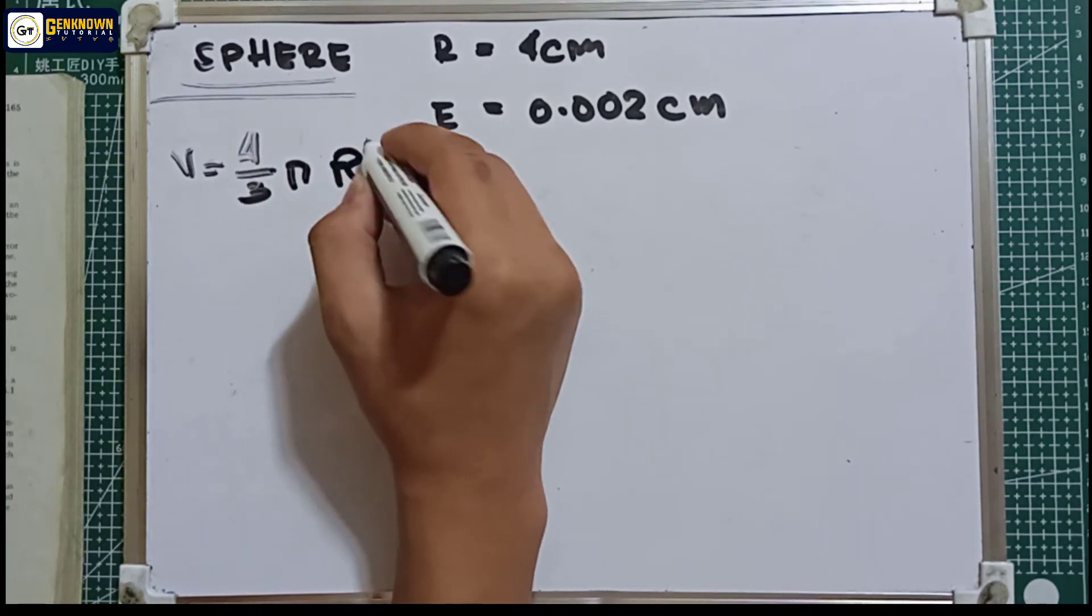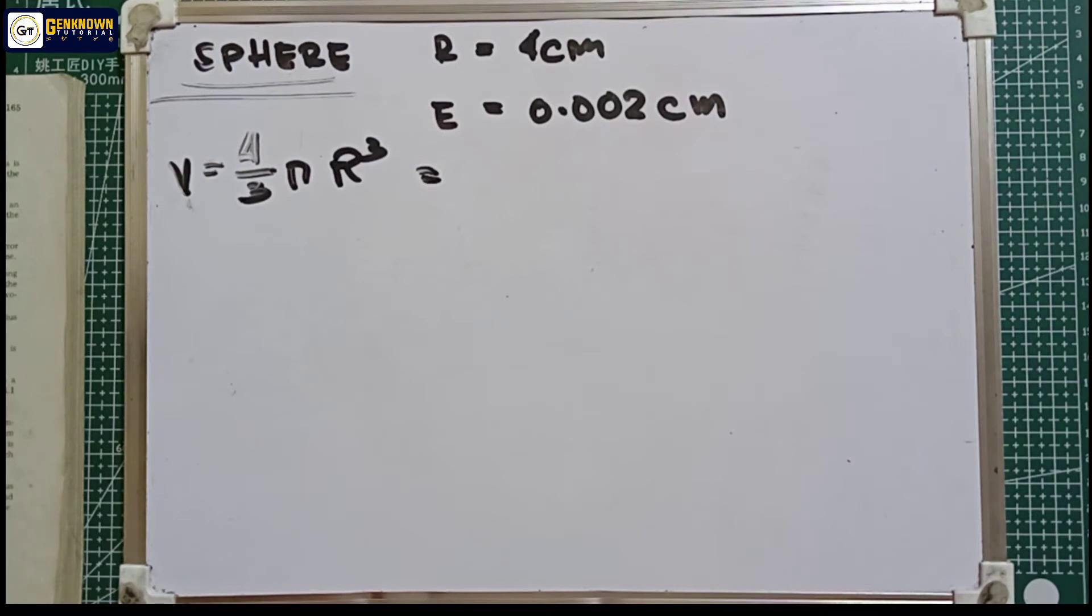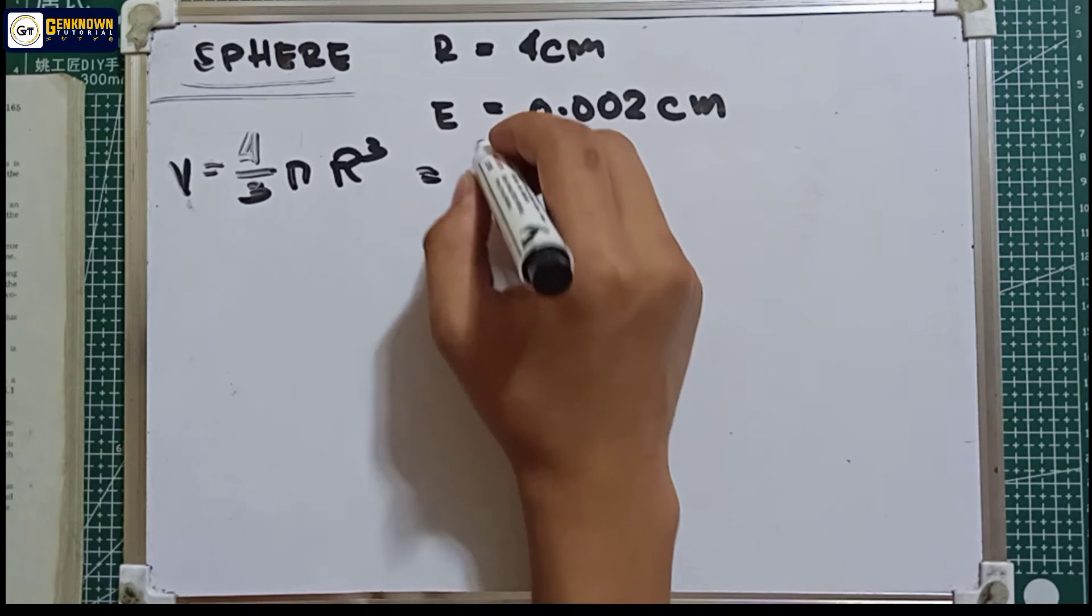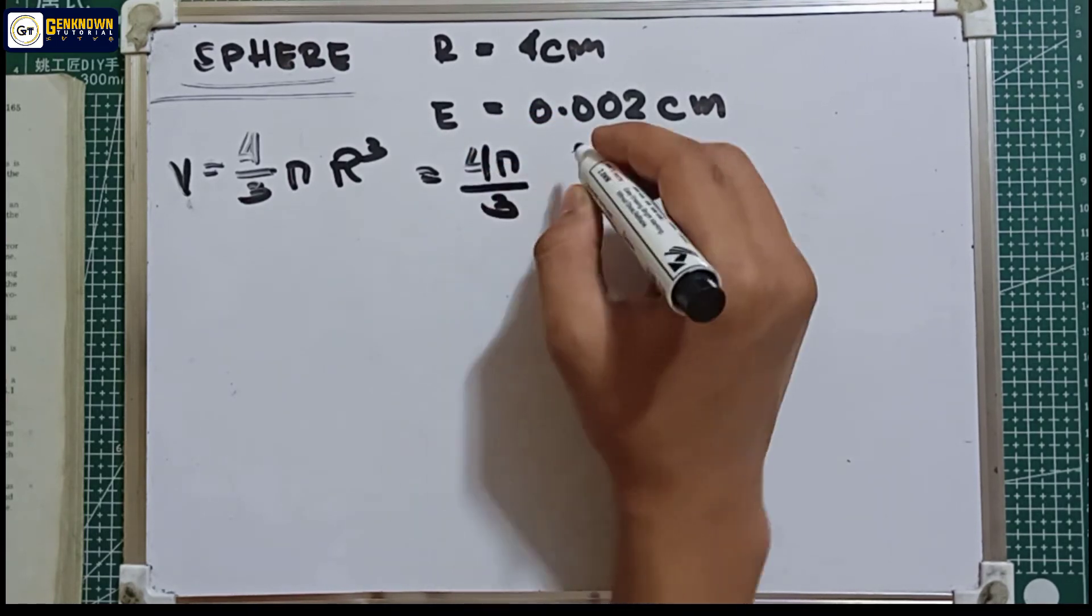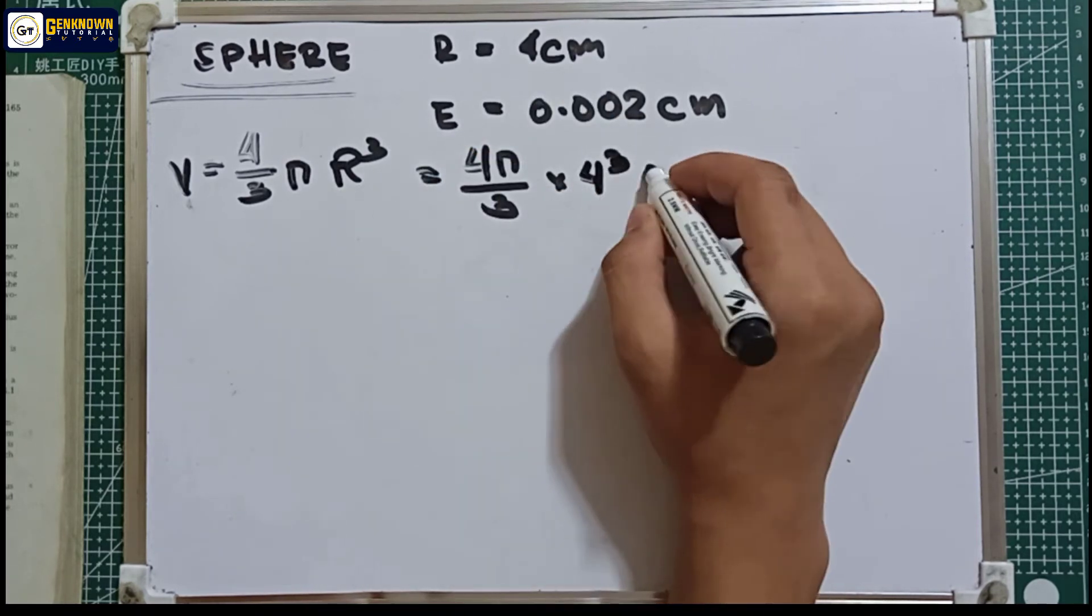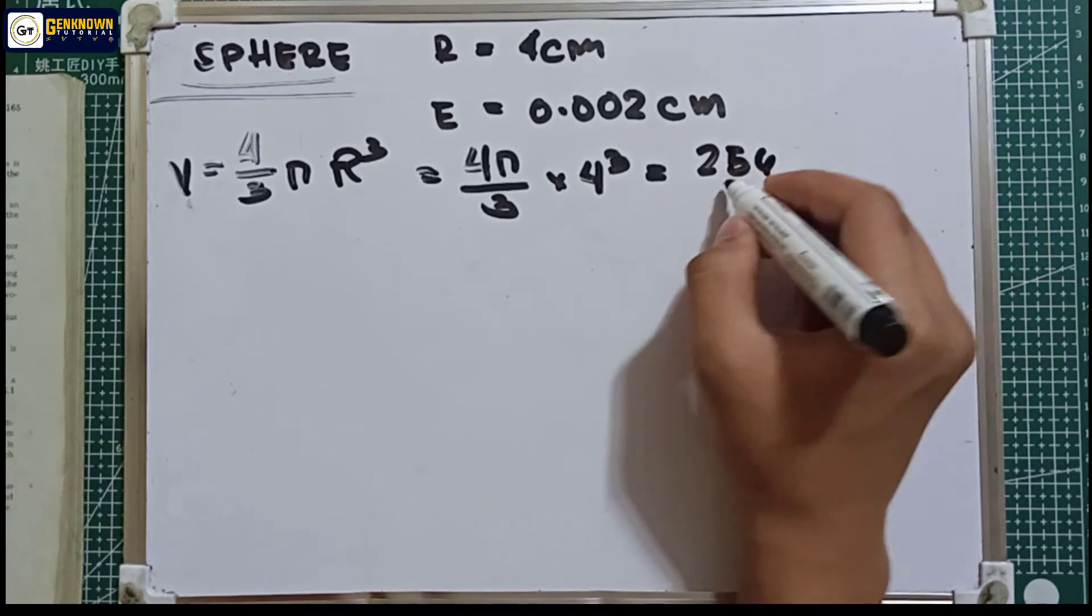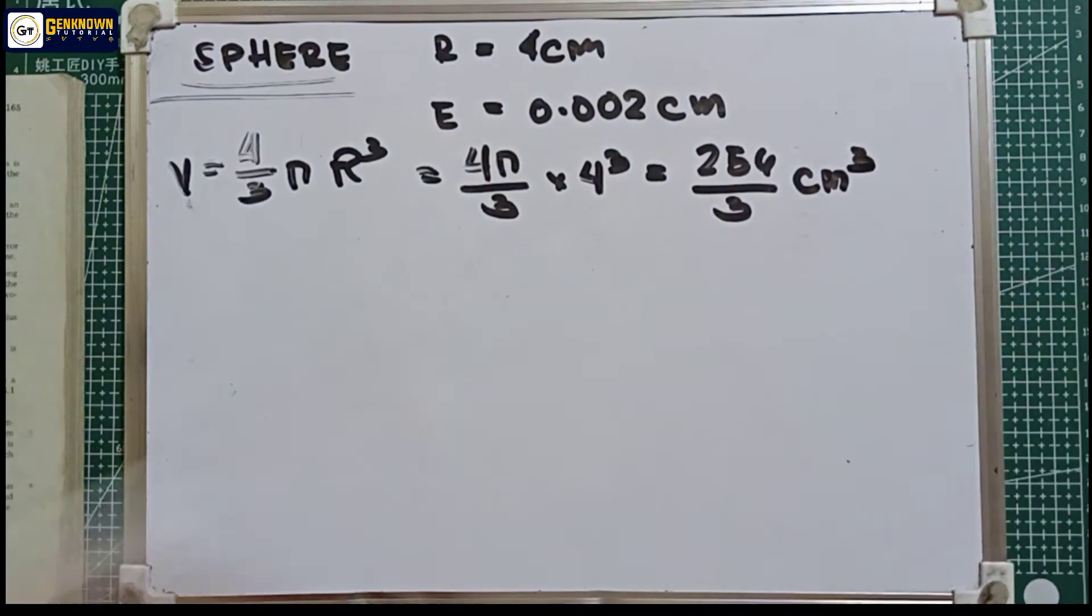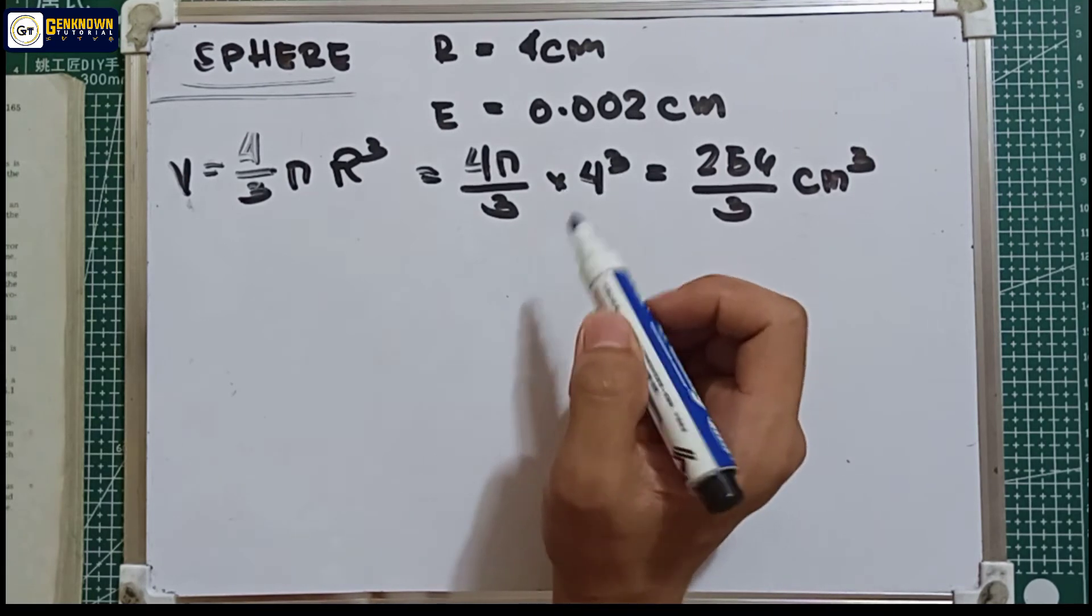Let's substitute the value of our radius into the volume. So this is 4π/3 times 4³, which equals 256/3 cm³. The centimeter unit comes from the radius.